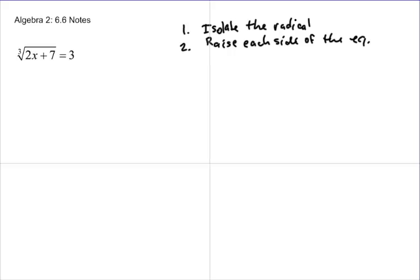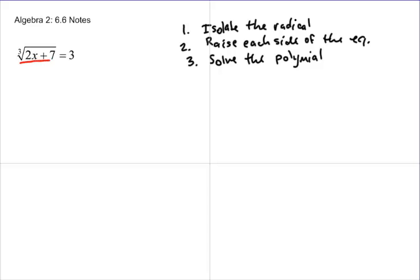We'll see some examples of that in a second. And number three, you want to solve the polynomial equation that you have left — sometimes it'll be a polynomial, sometimes it won't be. It just depends on what it looks like. So for example, on this first problem, I'm going to double-check and see if the radical is isolated.